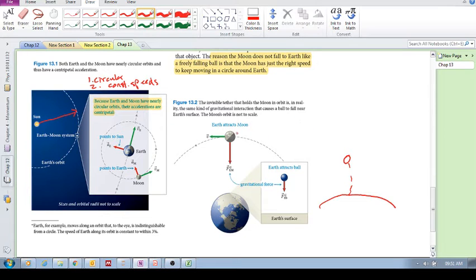The specific example is the moon moving around the Earth is accelerated by the same force that is causing a ball to accelerate towards the Earth.